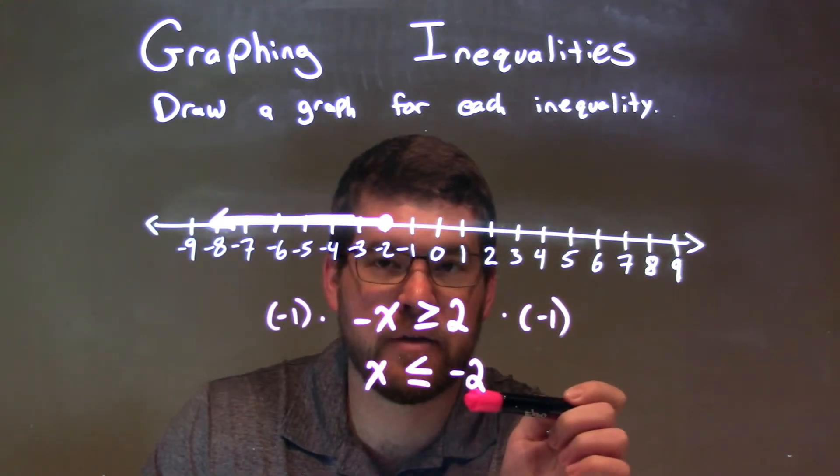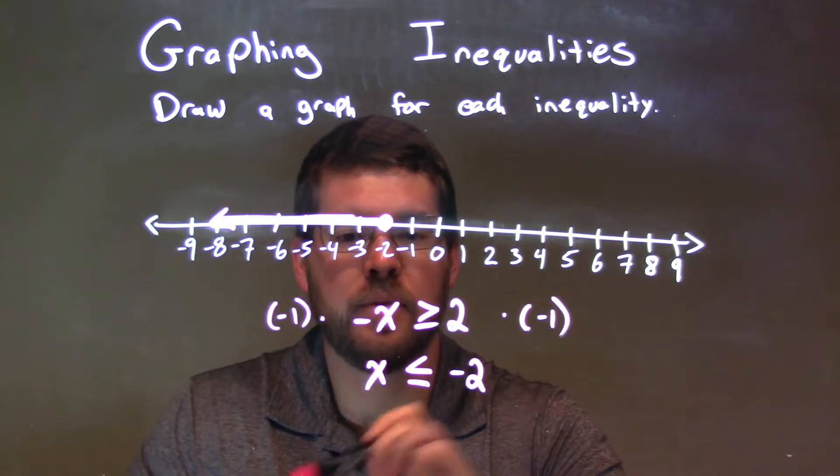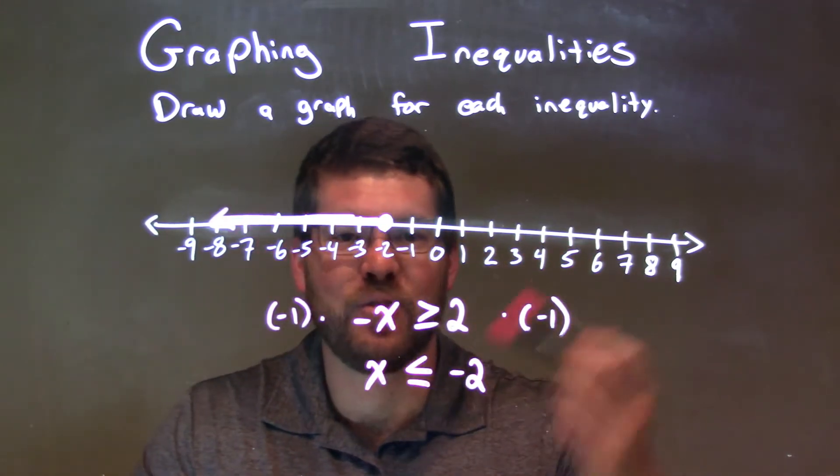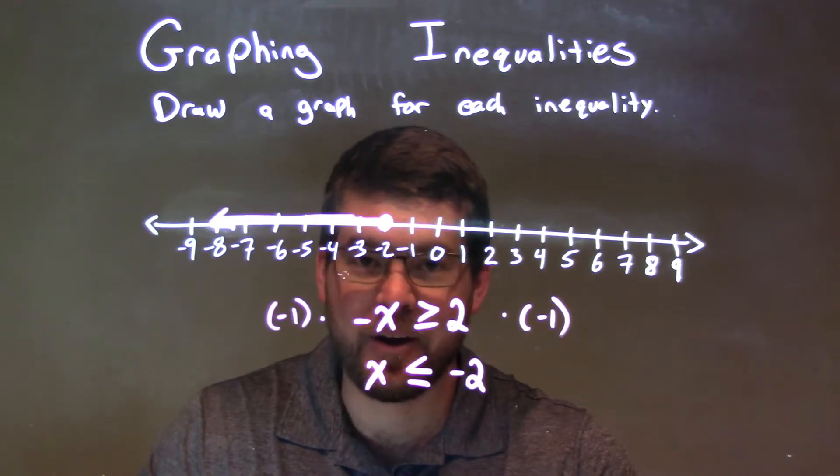Now, since x can equal negative 2, we have a closed circle at negative 2. And with x being less than negative 2, we shade to the left. And so our graph is our final answer.